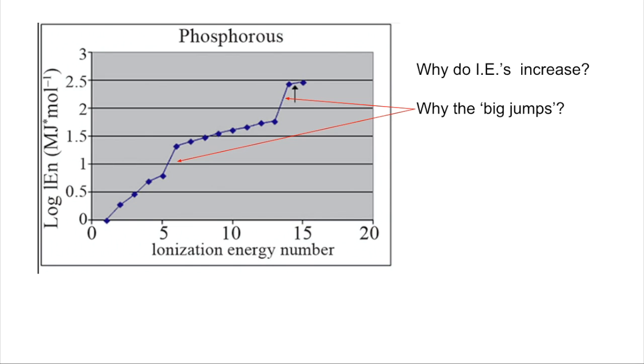So essentially there are two things to explain. Why do the ionization energies show an increase each time you remove an electron, and why do we get these big jumps here and here.